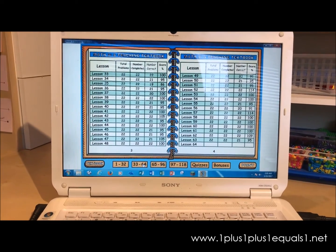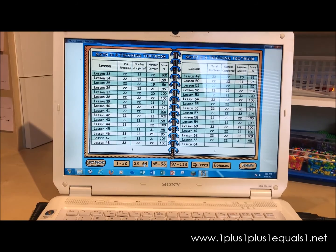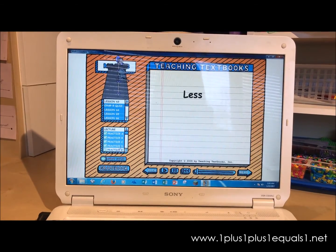So if we go back to the lessons, let's look at the lesson that she did. Oops, sorry. Textbooks. Lesson 63.